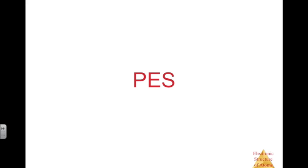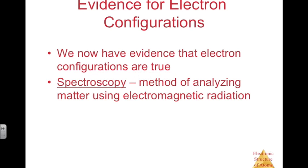This is Unit 1, Video 4, which is all about photoelectron spectroscopy, or PES. We talked about electron configurations in the last video, and electron configurations seem very abstract. It's very hard to understand how we have evidence for these electron configurations. Now we actually have this evidence to prove that electron configurations are true, and this evidence is called spectroscopy.